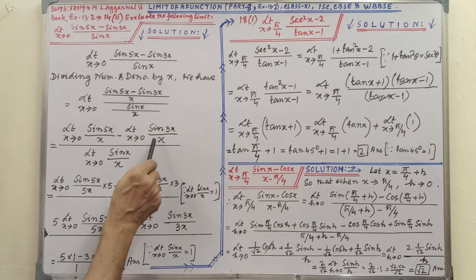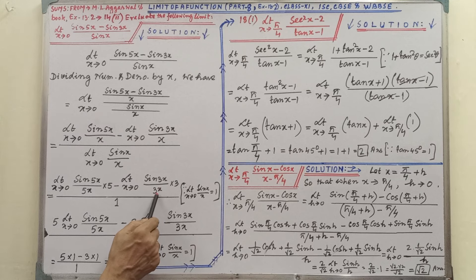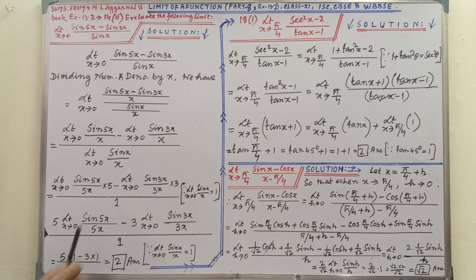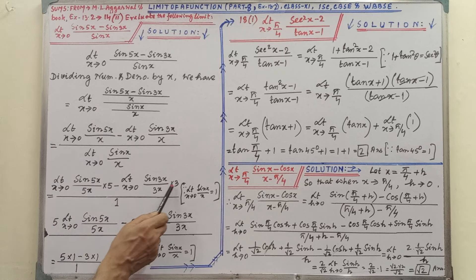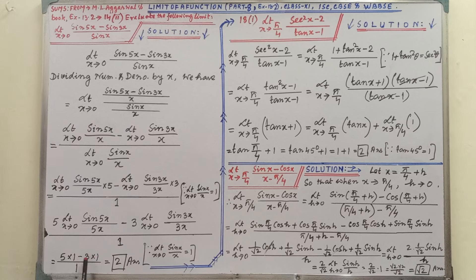In this way, if we take 3x here, then it will be in the frame of the formula; this is why we have taken 3 here, and for balancing we are writing 3 here. This is exactly in the frame of formula, so we are putting 1. Now this 5 and this 3, constant numbers, will come outside of the limit. Since sin x by x tends to 1, we are getting 1 and 1. So 5 minus 3 by 1 equals 2 — this is the answer.